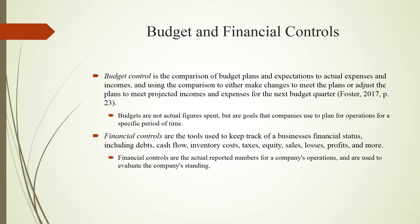Companies also exhibit control through budget and financial controls. Budget control is the comparison of budget plans and expectations to actual expenses and incomes, using that comparison to either make changes to meet the plans or adjust the plans to meet projected incomes and expenses for the next budget quarter. Financial controls are the tools used to keep track of a business's financial status, including debts, cash flow, inventory costs, taxes, sales, losses, profits, and more.